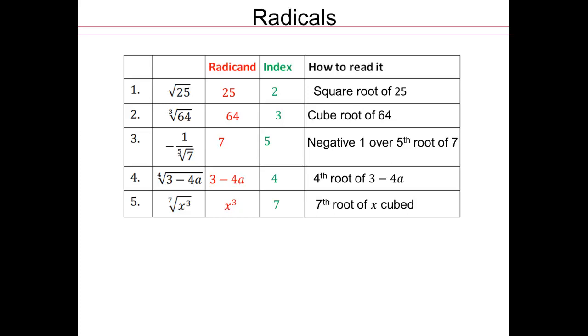Now, if you notice, we threw in 1 over fifth root of 7. And this negative doesn't have anything to do with the exponent. Remember, nope. The negative is going to follow through if you were to evaluate it. So 7 is the radicand, 5 is the root. So you have negative 1 over fifth root of 7. That's how you would read this. Fourth root of 3 minus 4a. Seventh root of x cubed. So that's how you read all these.